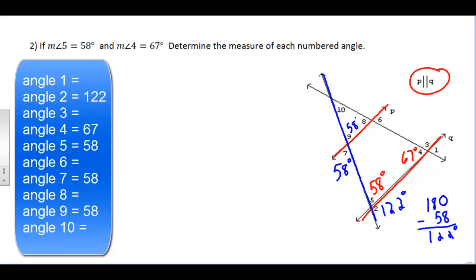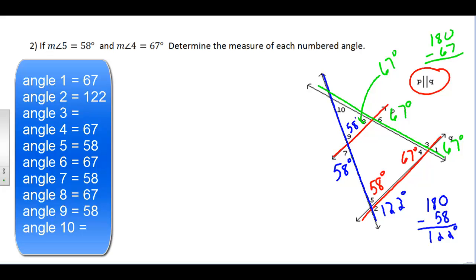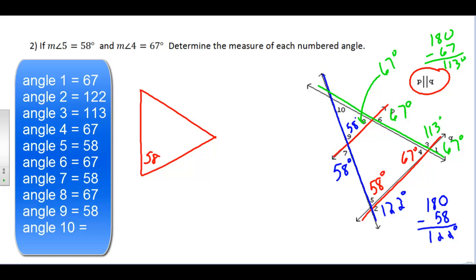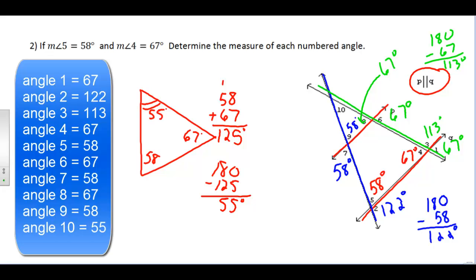Working along the other line: angle 4 is 67 degrees, so alternate interior angle 6 is also 67. Corresponding angle 8 is 67, and alternate exterior angle 1 is also 67. Consecutive interior angles 6 and 3 must be supplementary, so angle 3 is 180 minus 67, which equals 113 degrees. For angle 10, since angles 9 and 8 are two angles of a triangle measuring 58 and 67 degrees, their sum is 125, so the third angle, angle 10, is 180 minus 125, which equals 55 degrees.